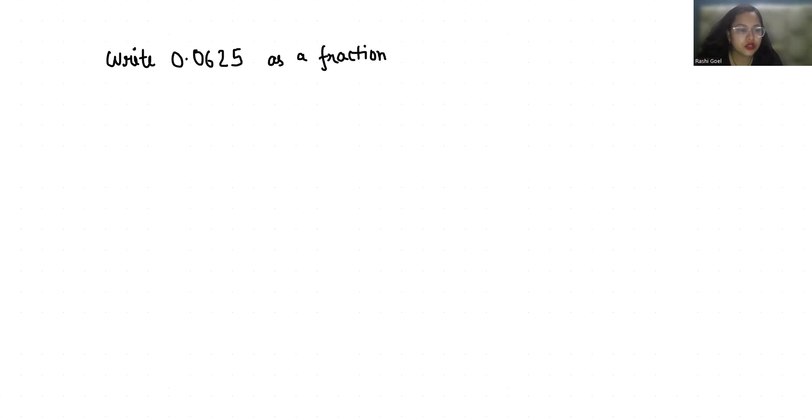So 0.0625 is right now in decimal form and we have to convert it to fraction form, that is P by Q form, where P is numerator and Q is denominator.